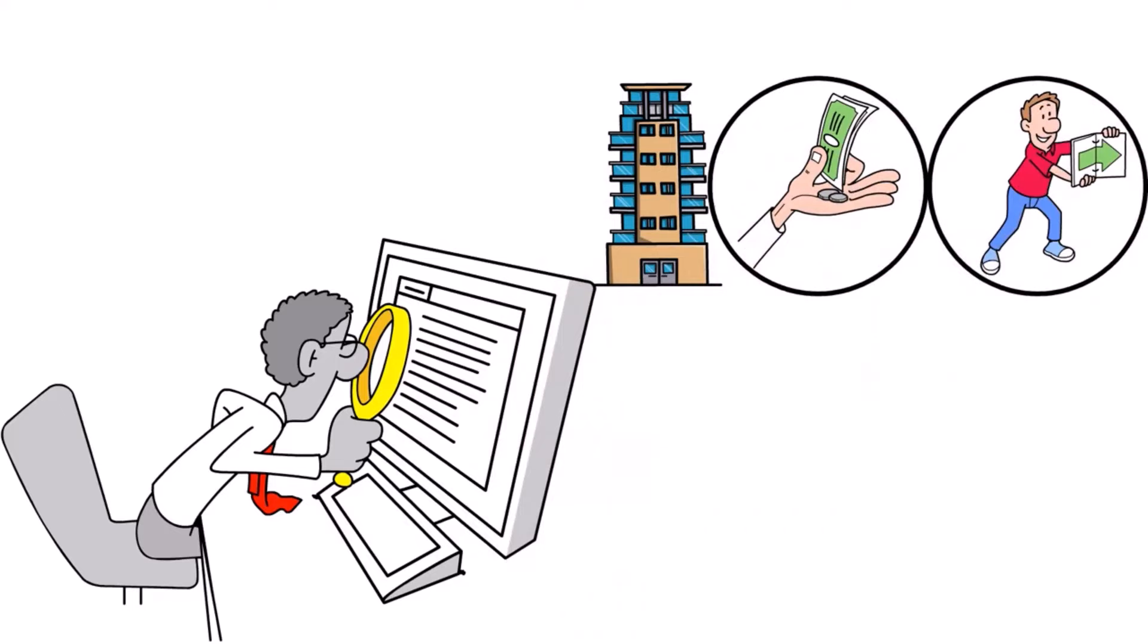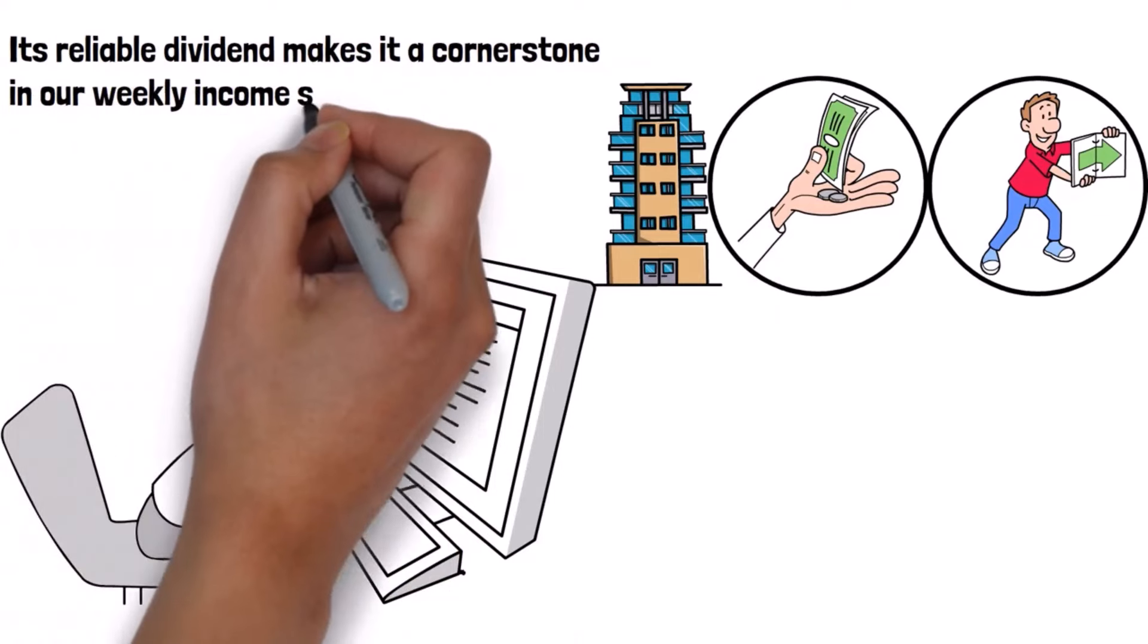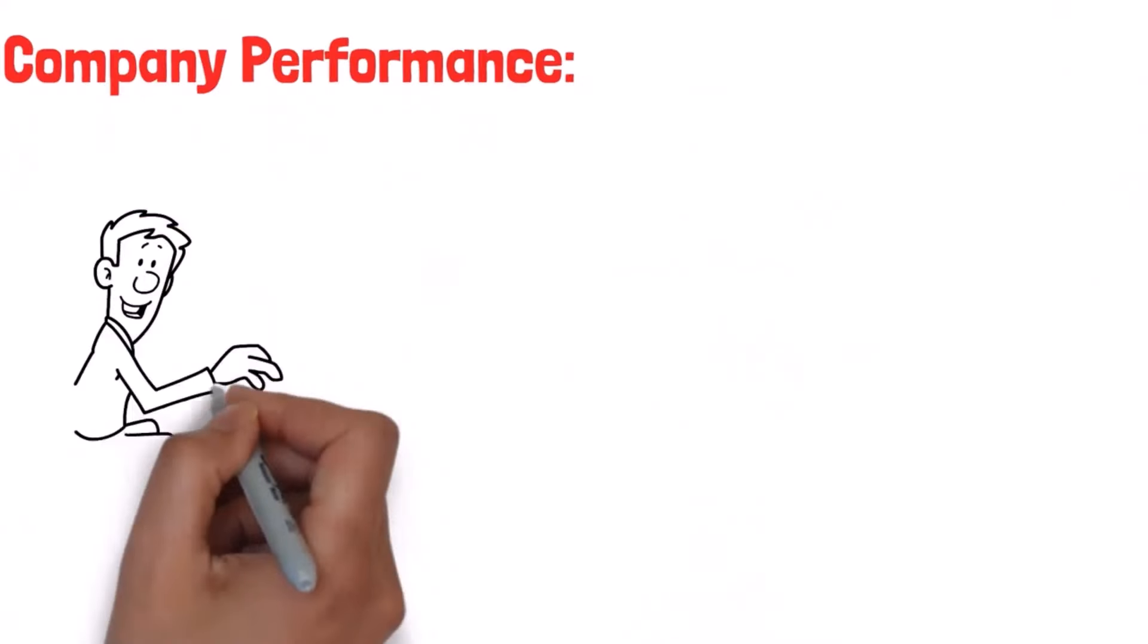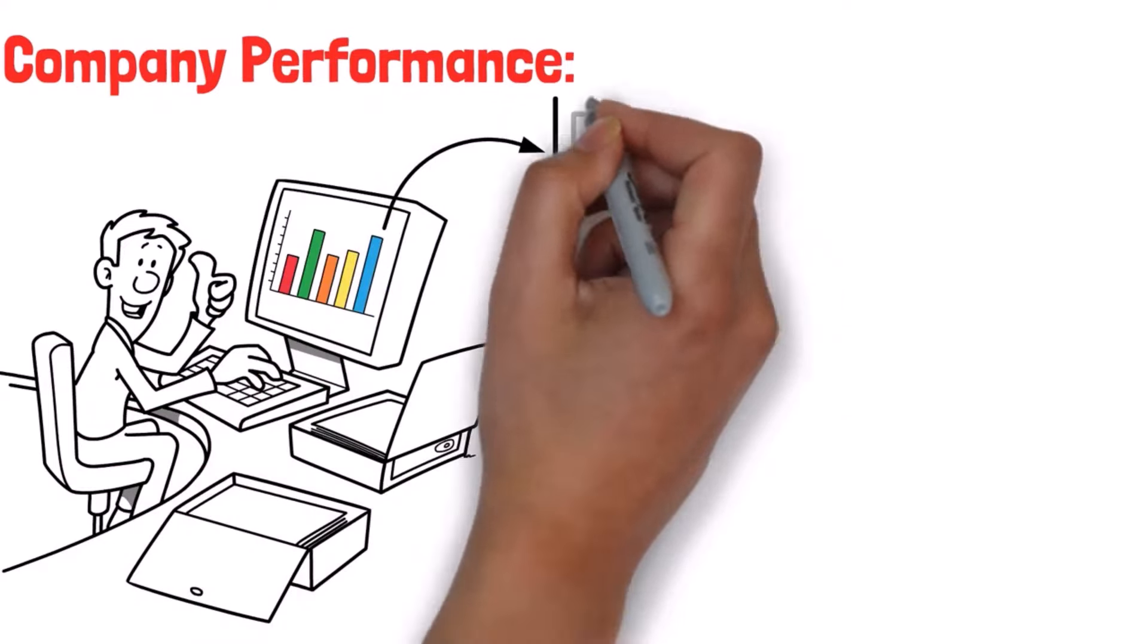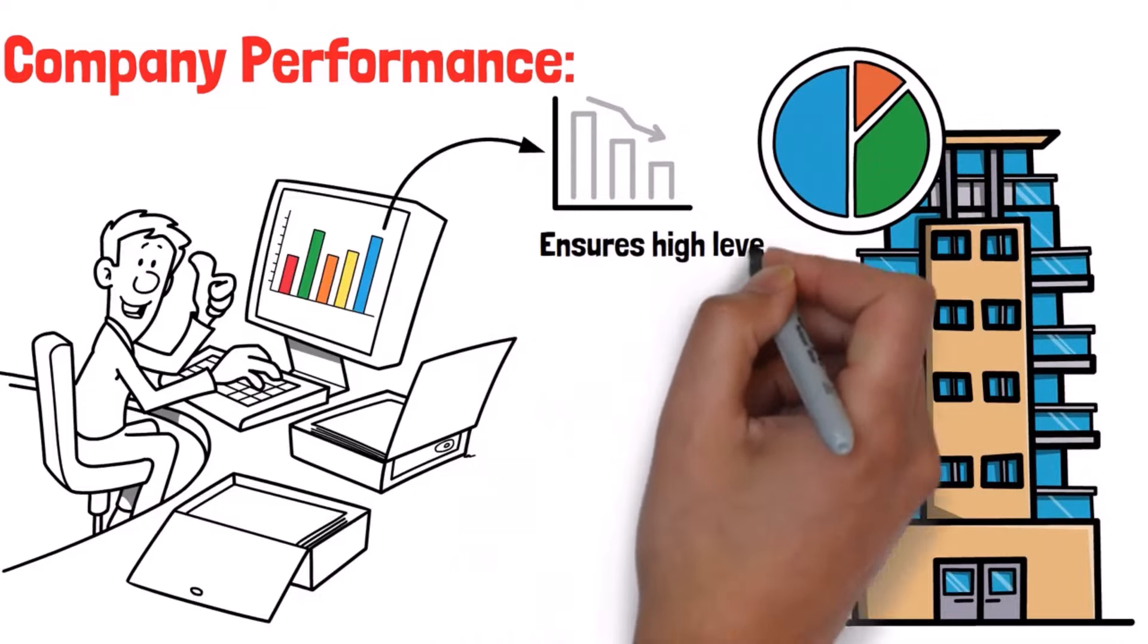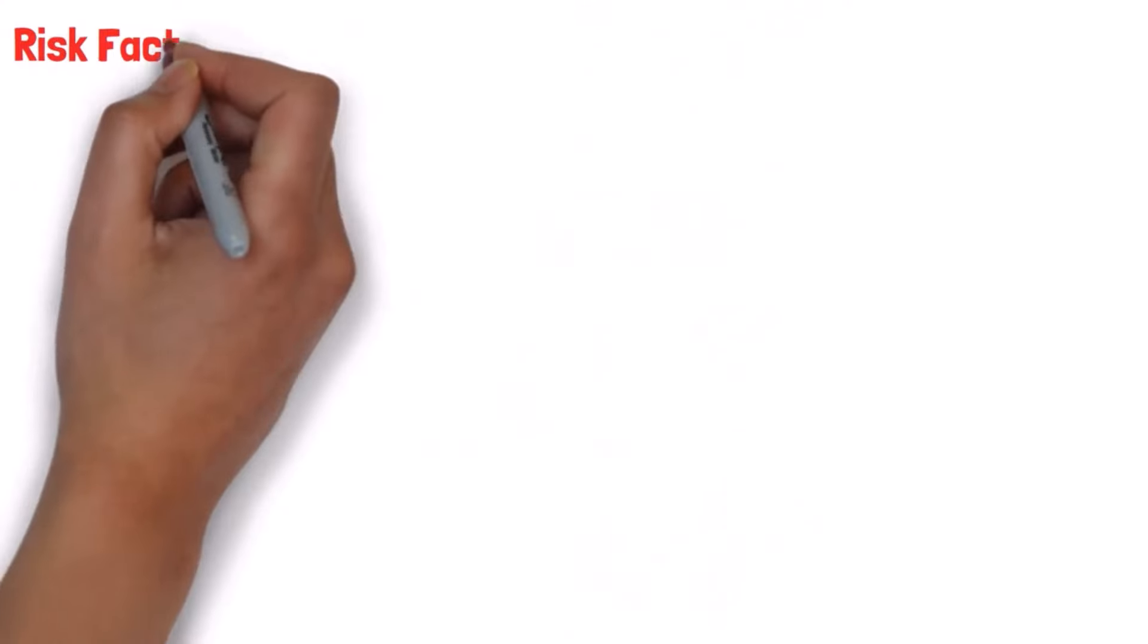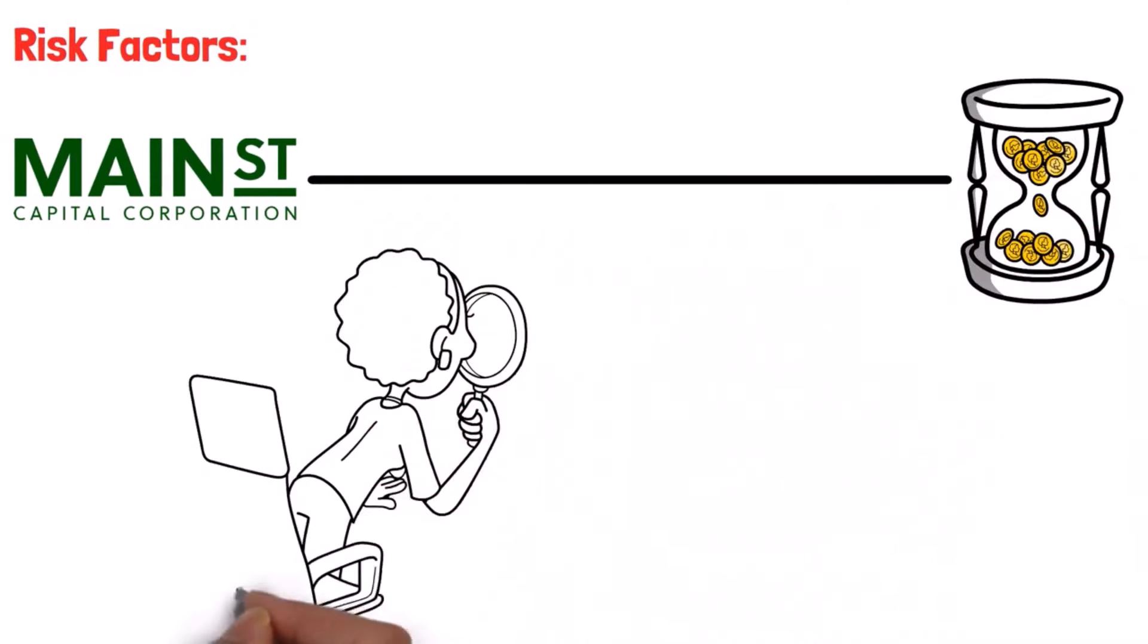Company performance: MAIN has a proven track record of stable performance even during economic downturns. The company's hands-on approach with its portfolio companies ensures high levels of due diligence and risk management. Risk factors: While MAIN offers steady dividends, its focus on lower middle-market businesses means it can be more susceptible to economic fluctuations.